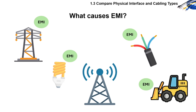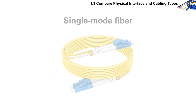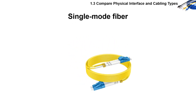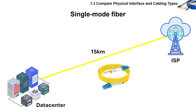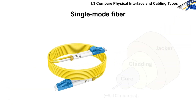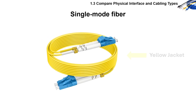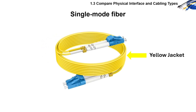There are different types of fiber optic cables, and let's start with single-mode fiber. It is used for long-distance, high-speed connections. It uses laser light and has a very small core, and the color code is yellow jacket.